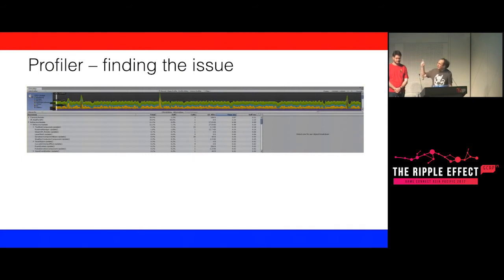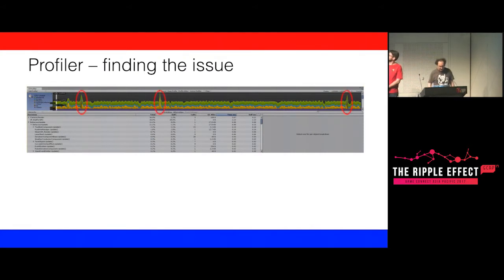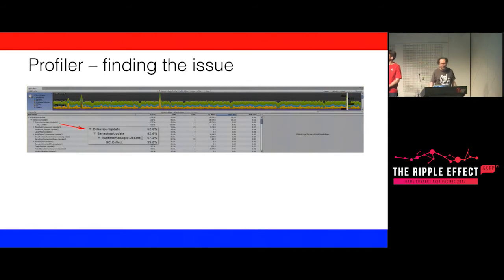These are actual captures from Symphony's profiler from the build where we started having problems — version control is a wonderful thing. You'll notice there are three spikes. Those three spikes show we're dropping well below 100 frames per second at those points. We examined the first one and you can see from that expanded portion that we're spending a lot of time in GC Collect. That's where we go: we've got a garbage collection problem.